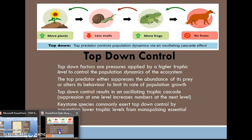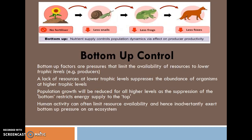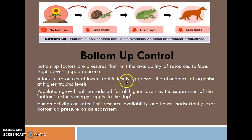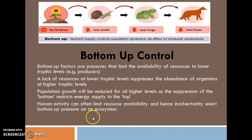Now we will discuss the basics of Bottom-Up Effect. Nutrient supply controls population dynamics via its effect on producer productivity. If there is no fertilizer, there will be less snails, less frogs, and less foxes. Bottom-Up Effect refers to pressures that limit the availability of resources to lower trophic levels — that is, the producers. Lack of resources at lower trophic levels suppresses the abundance of organisms at higher trophic levels. Population growth will be reduced for higher levels as suppression at the bottom restricts energy supply to the top. Human activity can often limit resource availability and inadvertently exert bottom-up pressure in an ecosystem.